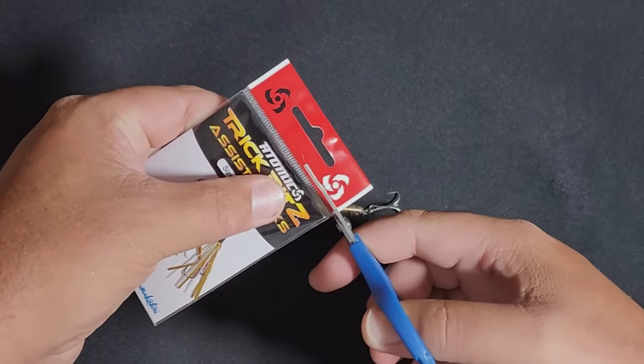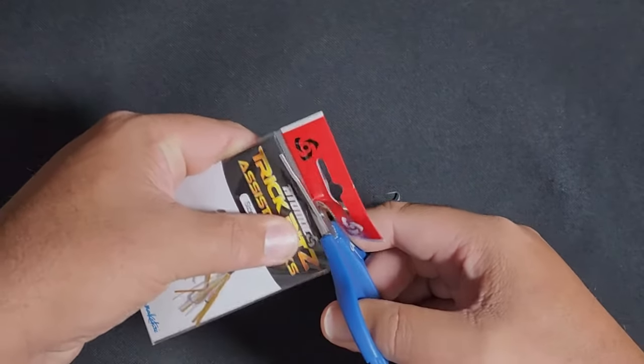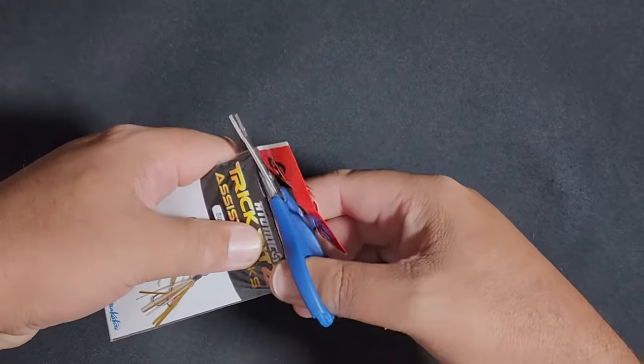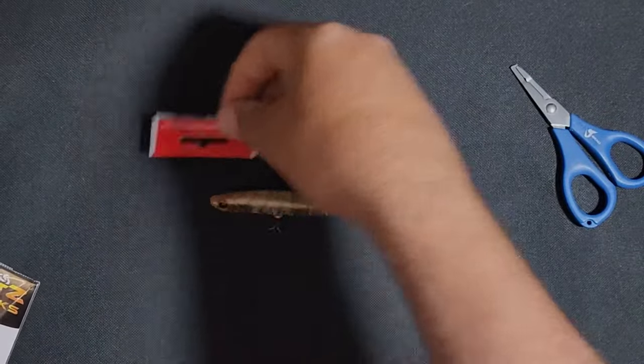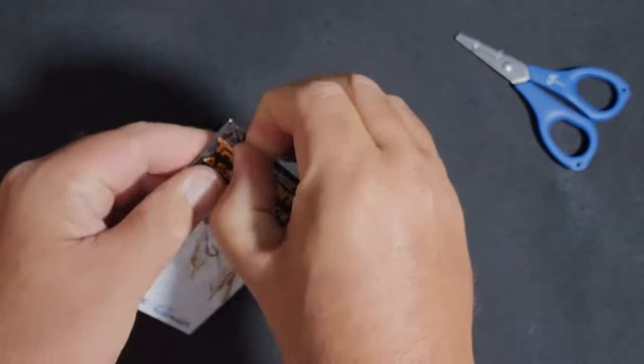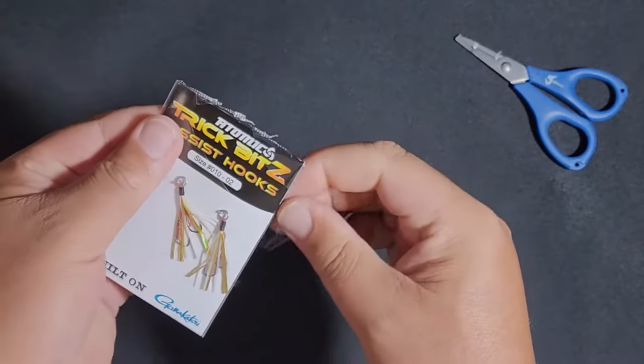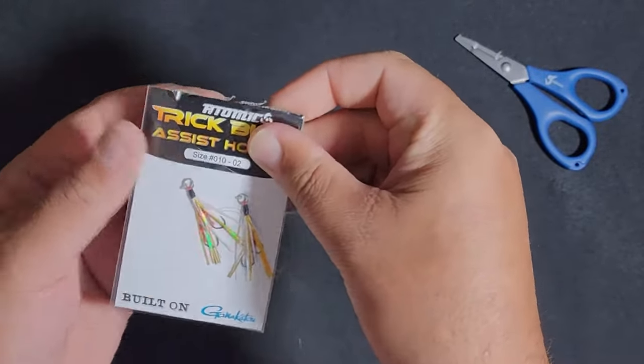So now we're going to add some assist hooks to replace the rear treble. Assists against small game like whiting, mullet, bream etc. just make more sense and can make a massive difference to our hookup rate. You can easily make assist hook setups yourself but for ease these atomic trick bits that I've got, they work true.